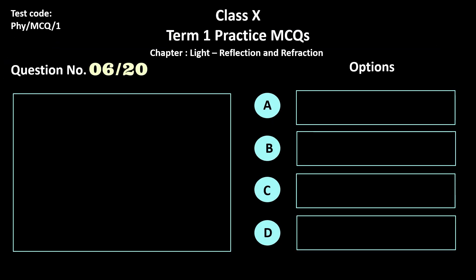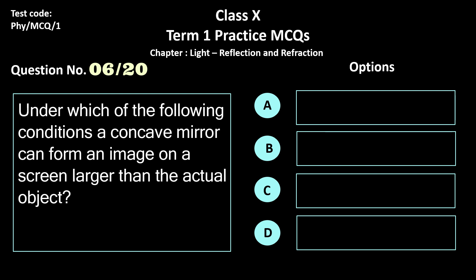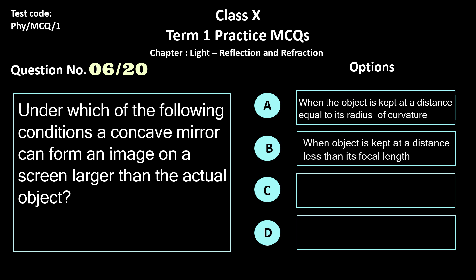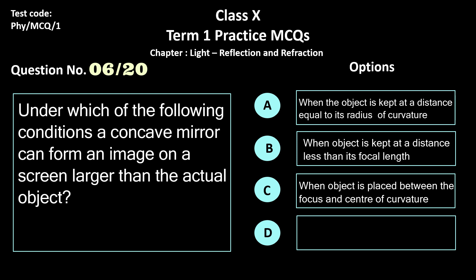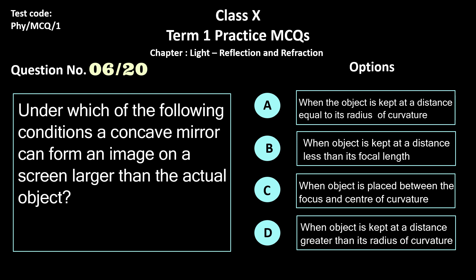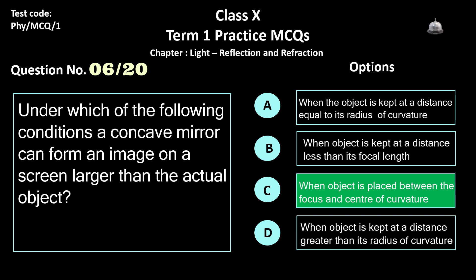Question 6. Under which of the following conditions can a concave mirror form an image on a screen larger than the actual object? Options: a) when the object is kept at a distance equal to its radius of curvature, b) when the object is kept at a distance less than its focal length, c) when the object is placed between focus and center of curvature, d) when the object is kept at a distance greater than its radius of curvature. The correct answer is option c, when the object is placed between focus and center of curvature.